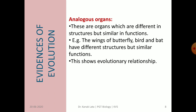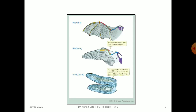The next evidence of evolution is through analogous organs. Analogous organs are those organs which are just opposite to homologous organs — they are different in structure but same in function. For example, the wings of butterfly, birds, and bat have different structures but similar functions. This shows evolutionary relationships among these different organisms. In this figure, it is shown that wings of bats, birds, and insects are used for the common function of flying, but wings of all three have different structural plans.